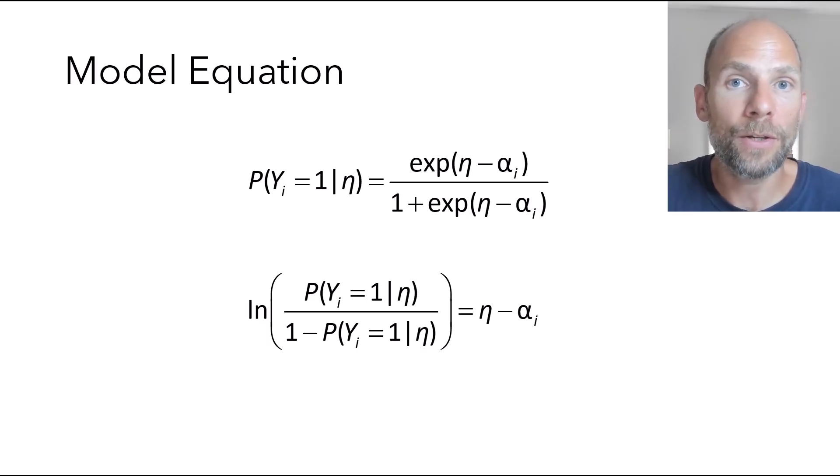The Rasch model can also be written in terms of a logit equation. So instead of the probability, we can transform the probability into a logit. A logit is the natural logarithm of the item probability divided by 1 minus the item probability. And then that is equal to eta minus alpha i.